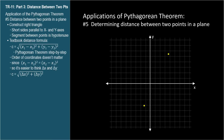Let's pick two points: the first with coordinates and the second with coordinates. We want to know the distance between these two points. Not easy at first glance, but when we draw horizontal and vertical lines through the points, you can probably see where we're going.